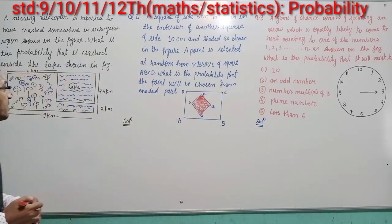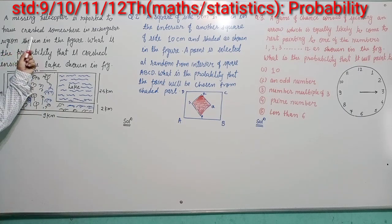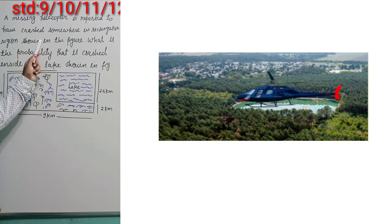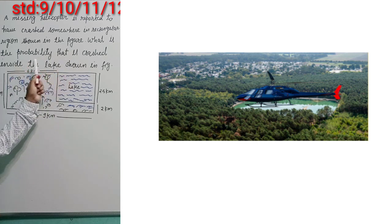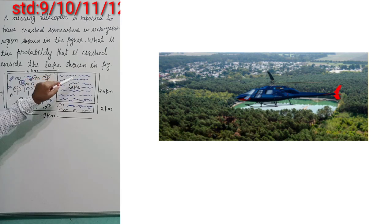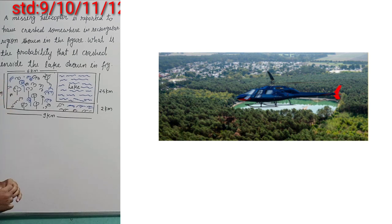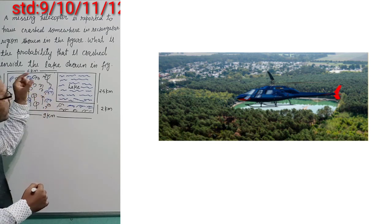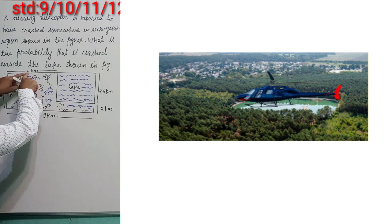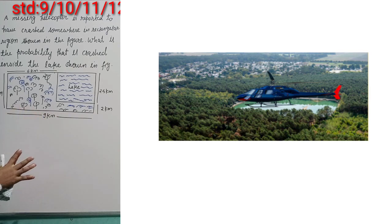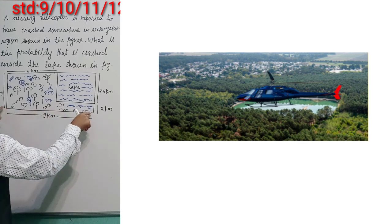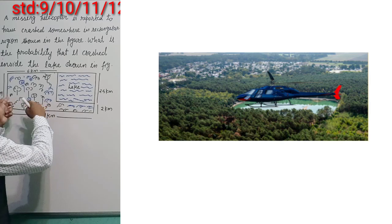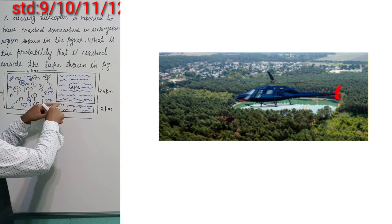In the very first question, a missing helicopter is reported to have crashed somewhere in a rectangular region shown in the figure. What is the probability that it crashed inside the lake? This entire rectangular region is like your sample space — your total events — because anywhere the helicopter can crash, but it is mentioned that the helicopter will crash inside the lake.